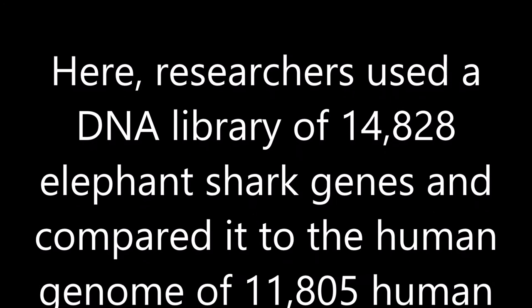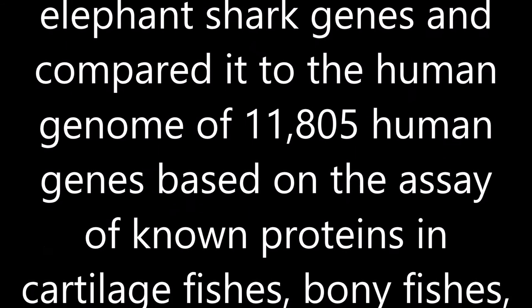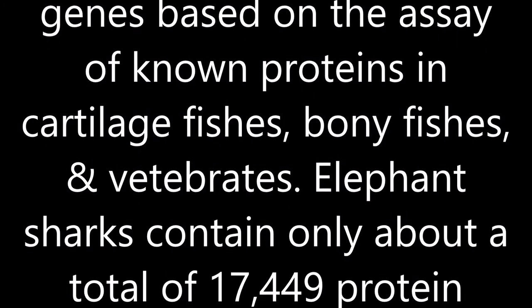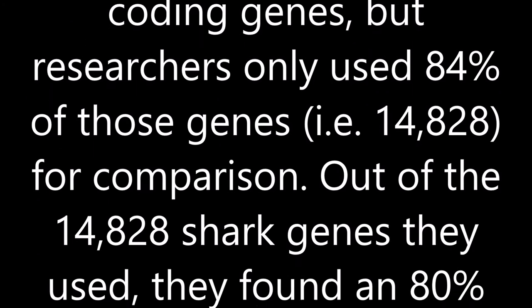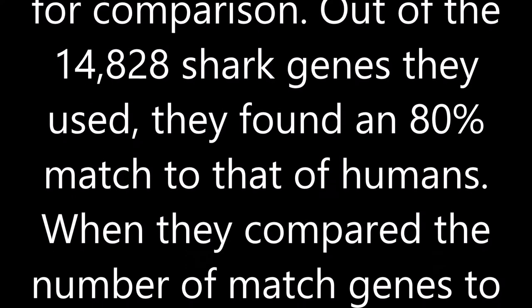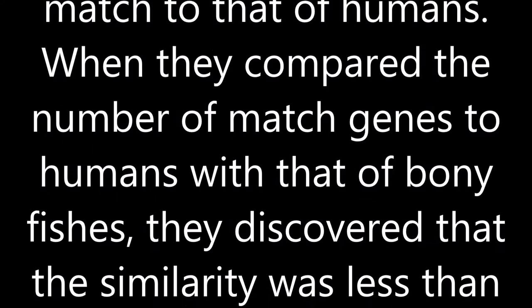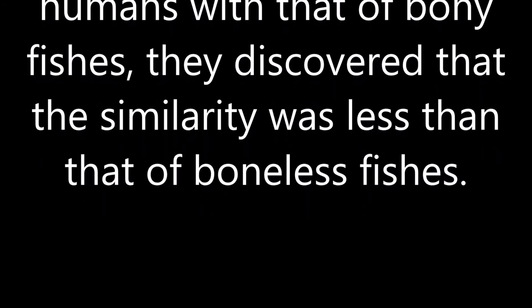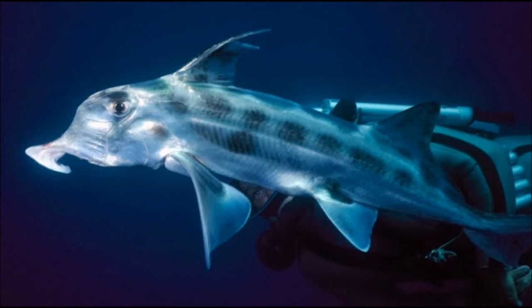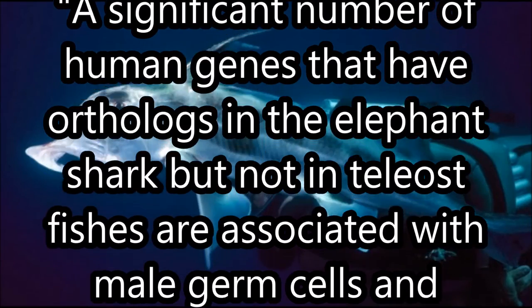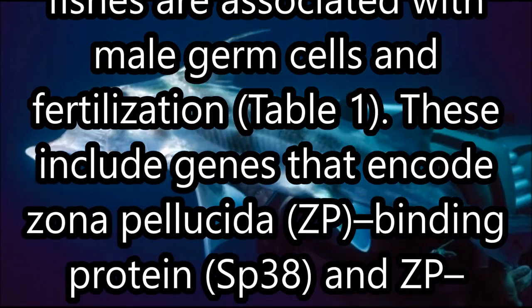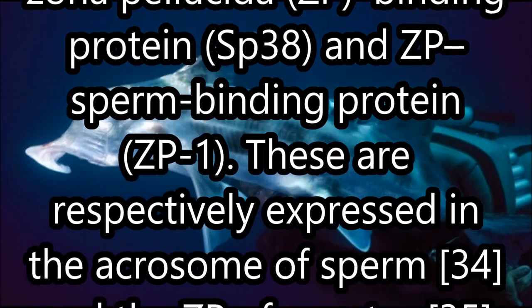Researchers used a DNA library of 14,828 elephant shark genes and compared them to the human DNA library, which used a total of 11,805 human genes. Elephant sharks contain only 84% of those genes. For comparison, out of the 14,828 shark genes they used, they found an 80% match of genetic regions to that of humans. When they compared the number of matched genes to humans with that of bony fishes, they discovered that the similarity was less than that of certain bony fishes. Despite the fact that humans and other tetrapod vertebrates share strong genetic similarity with cartilage fishes — typically the chimaera elephant shark — it was also found that those conserved genes were missing in bony fishes, as well as in invertebrates.